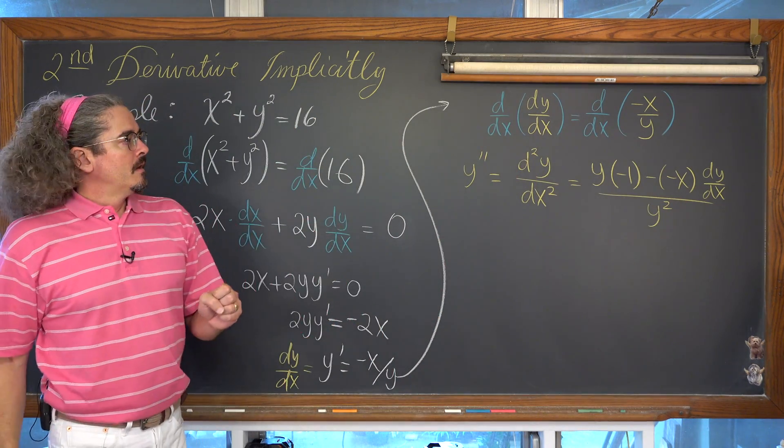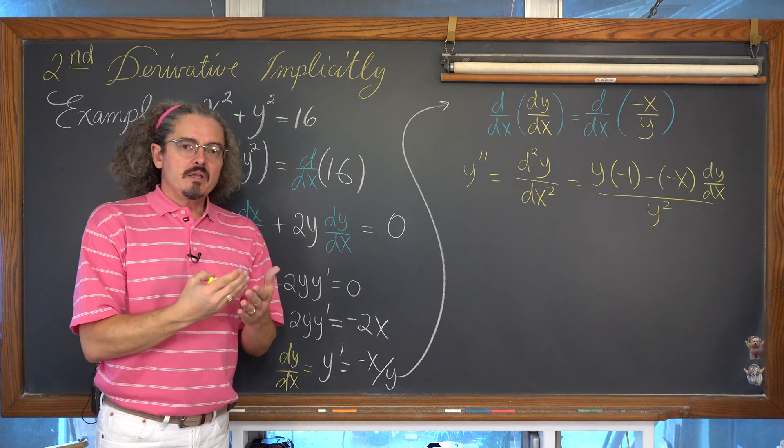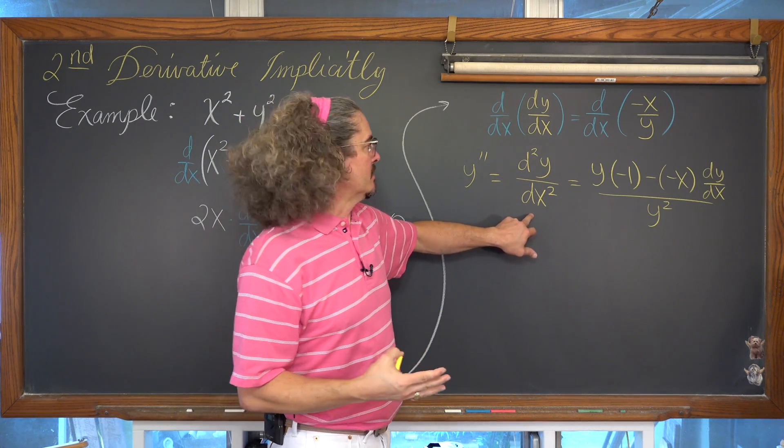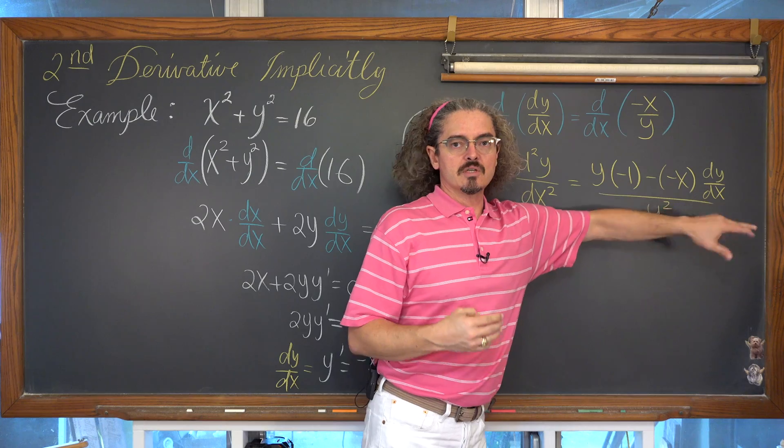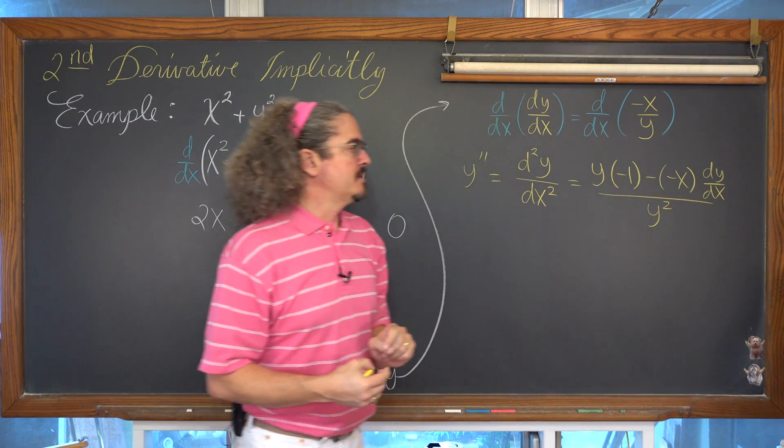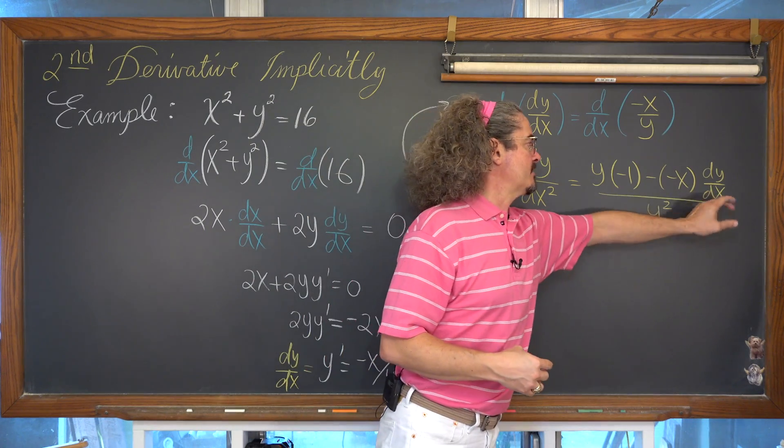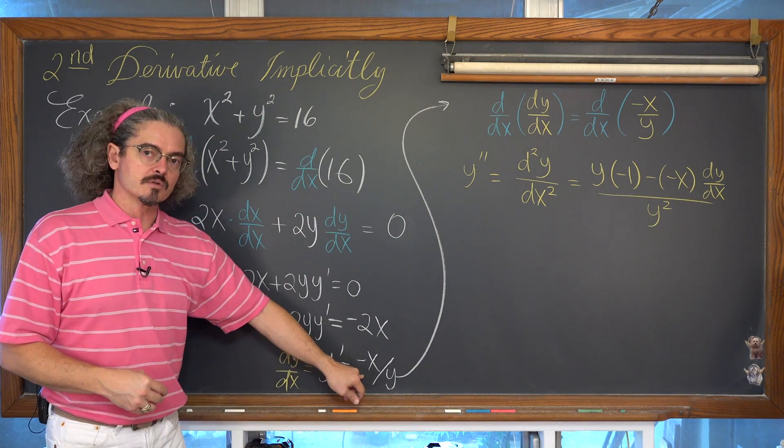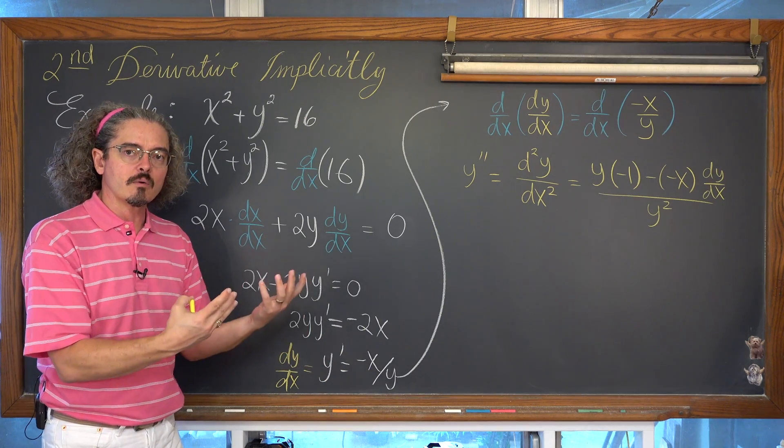Now, you'll never be allowed to write a second derivative equation with a first derivative notation in your final answer. So we need to get out the dy dx. We need to remove that first derivative notation and replace it with what it's equal to.